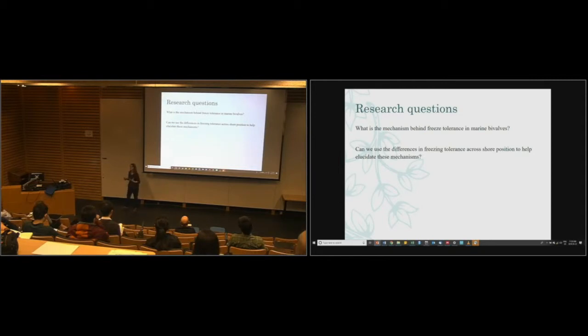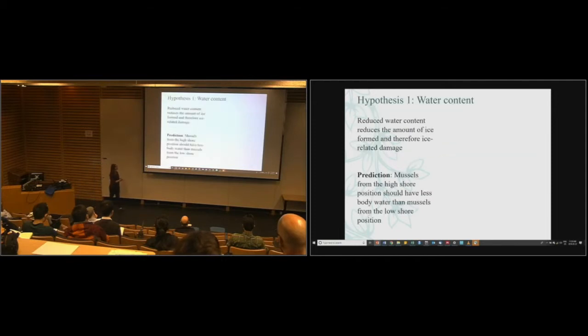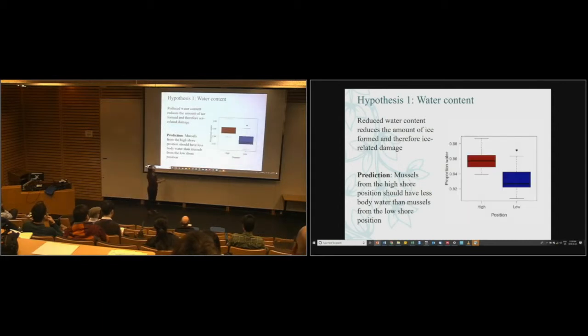Based on this, can we use this as a way of understanding the mechanisms of freeze tolerance in marine bivalves? I had three hypotheses. The first is really simple. This comes right from the terrestrial literature. We see freeze tolerant animals usually dehydrate as they go into winter. So what I thought is maybe the mussels from the high shore have lower water content, so less freezable water. That's easy to test. Here we've got proportion water on the y-axis, tidal position on the x. You can see, if anything, it's actually the opposite of what I predicted. This sort of makes sense if you're high up on the shore. You're going to want to keep a lot more water around because you're not exposed to water for very long. So we can definitely toss that one out.